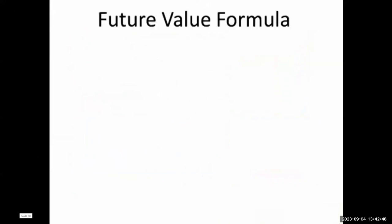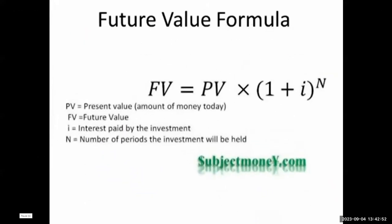For the future value formula, there are three pieces of information needed. We need to know the present value (PV) — the amount of money today. We need the interest rate or rate of return, which becomes the discount rate when finding present value. And we need to know how many periods the investment will be held, represented by N. You must make sure N and I match: if I is an annual percentage rate, then N must be in years; if I is semi-annual, then N represents six-month periods.